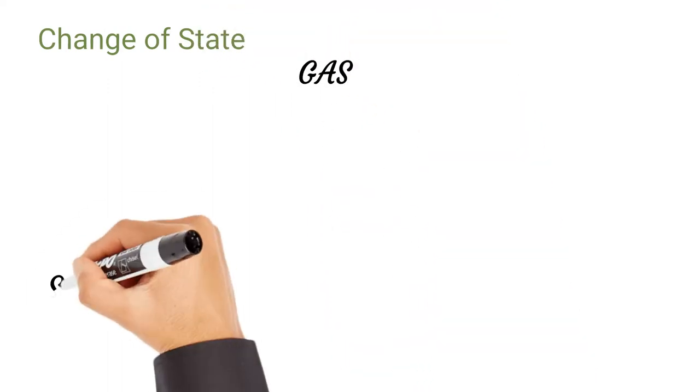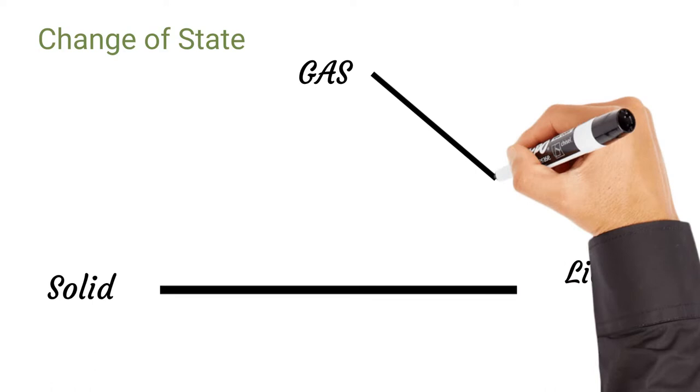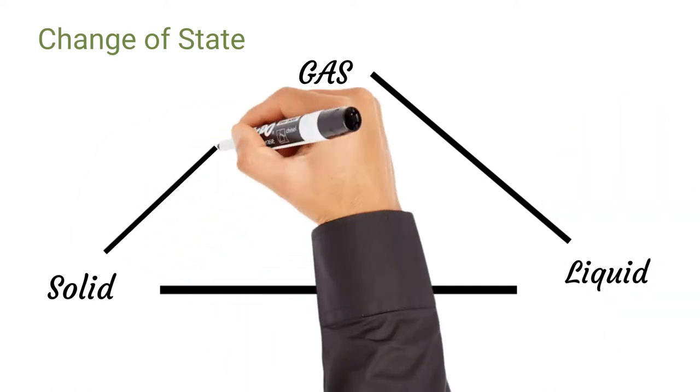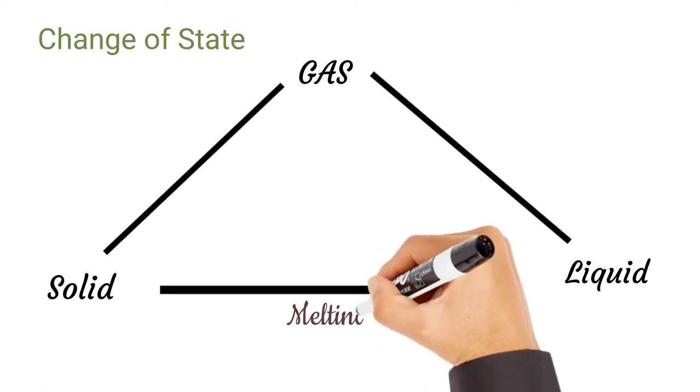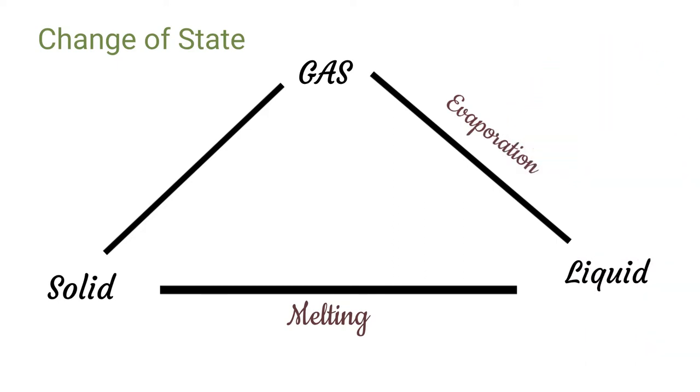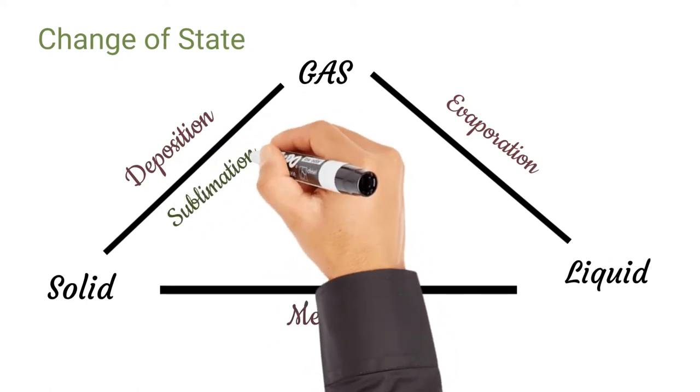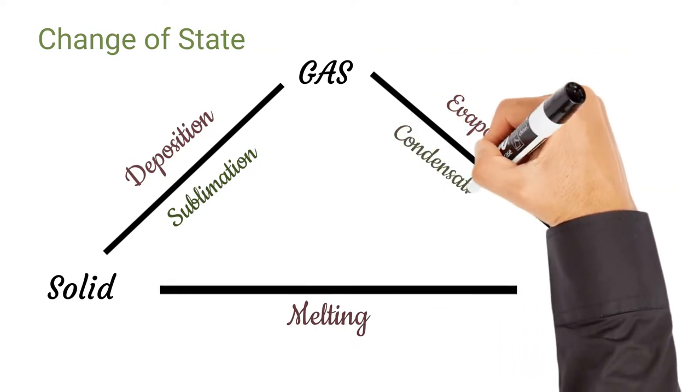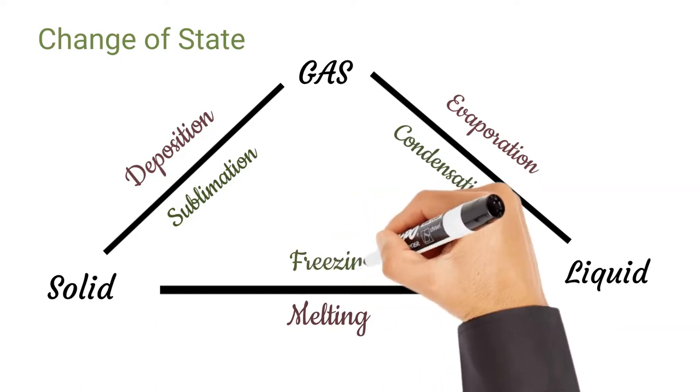Changes of state: Matter can change its states from gas to liquid, from liquid to gas, and so on. These processes are given below: from solid to liquid is melting; from liquid to gas by evaporation; from gas to solid by deposition; from solid to gas is sublimation; from gas to liquid is condensation; and from liquid to solid by freezing.